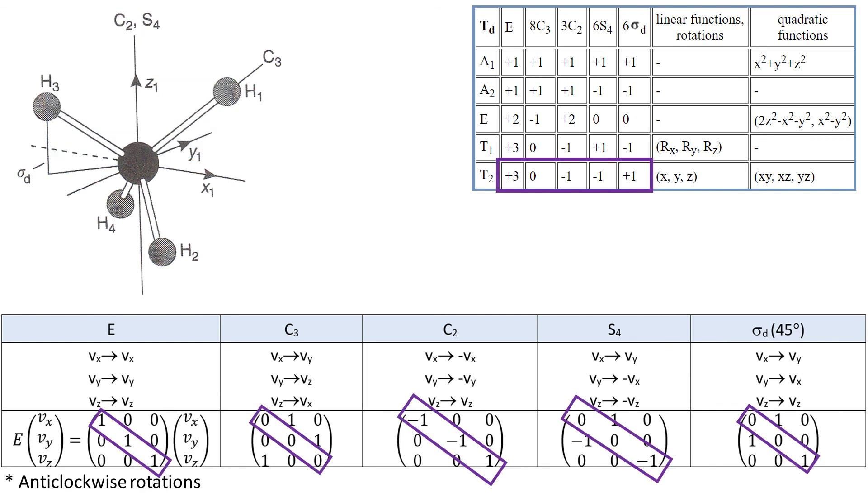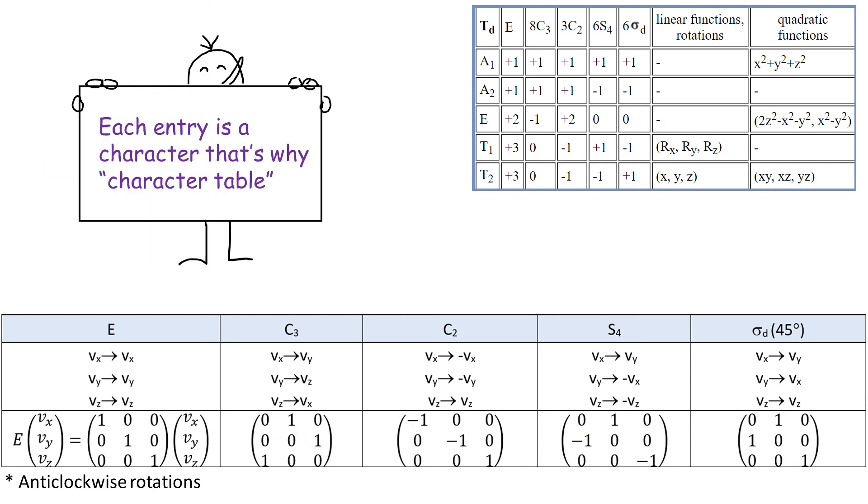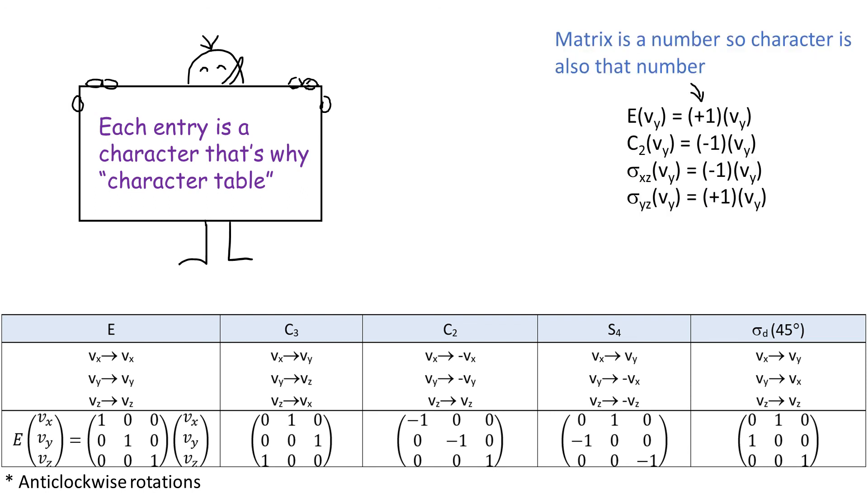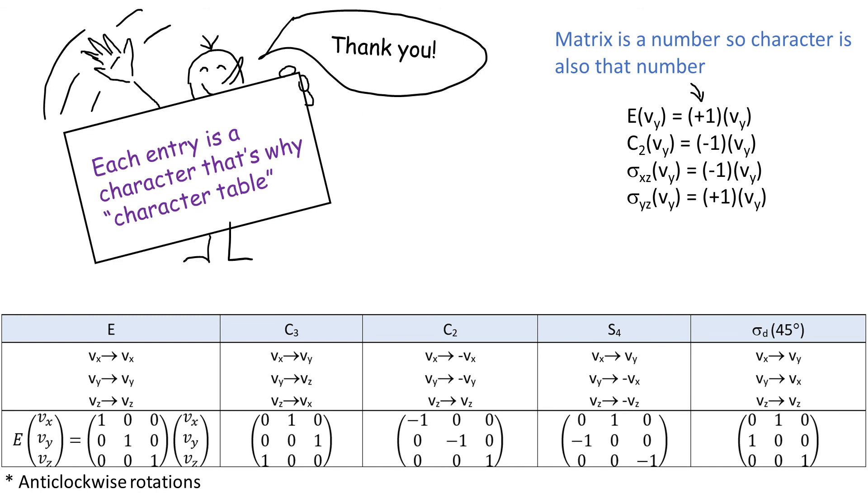So we recreated T2 representation for TD group. So now we know that a character table is called a character table because the entries are characters of matrices. Please recall that A and B representations are made from one by one matrices, which is a number, and therefore the character is also the number. I hope that helps, thank you for watching, bye!